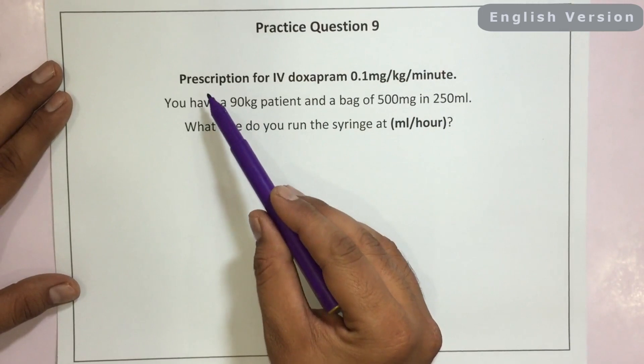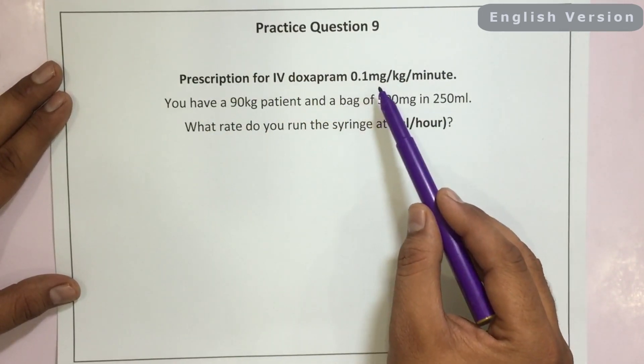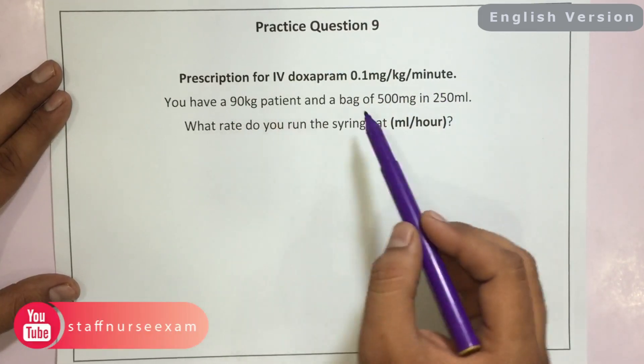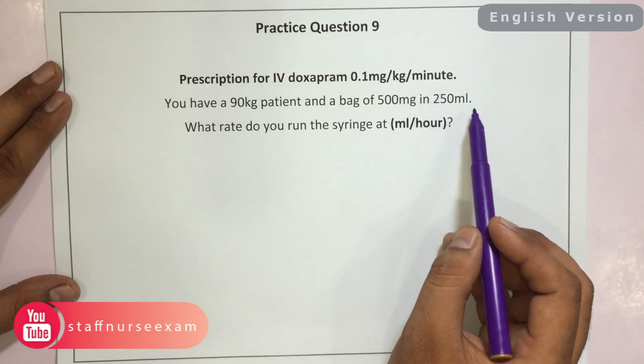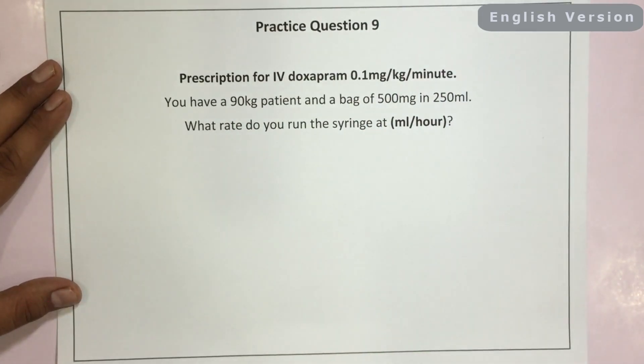As per this question, there is a prescription for IV doxapram 0.1 mg per kg per minute. You have a 90 kg patient and a bag of 500 mg in 250 ml. What rate do you run the syringe at?